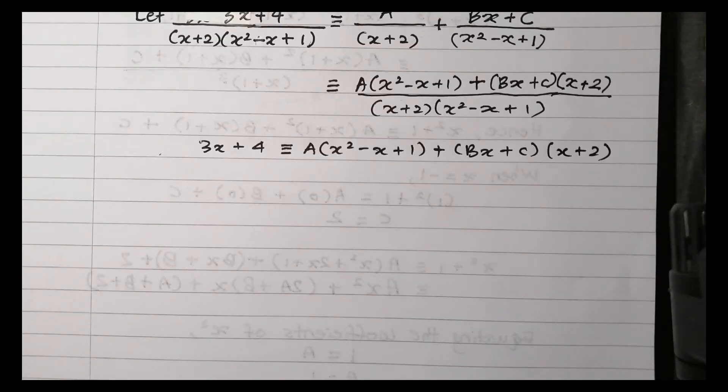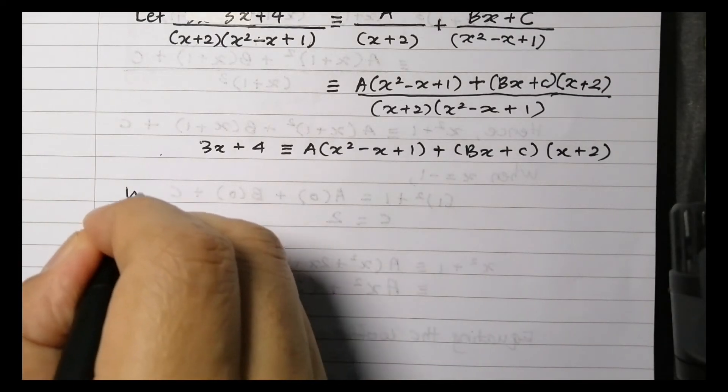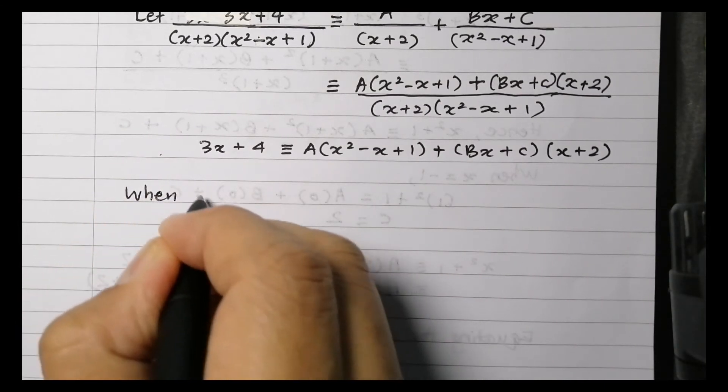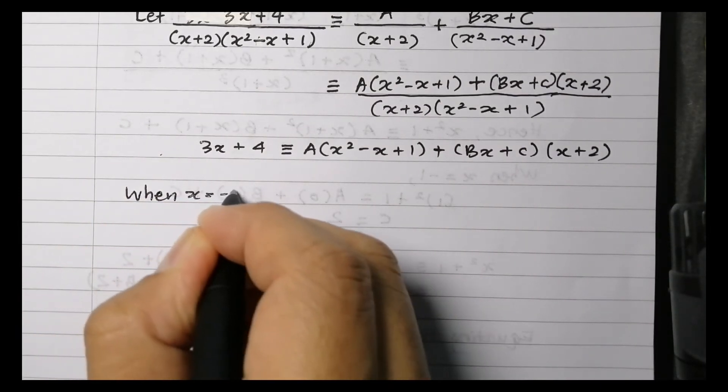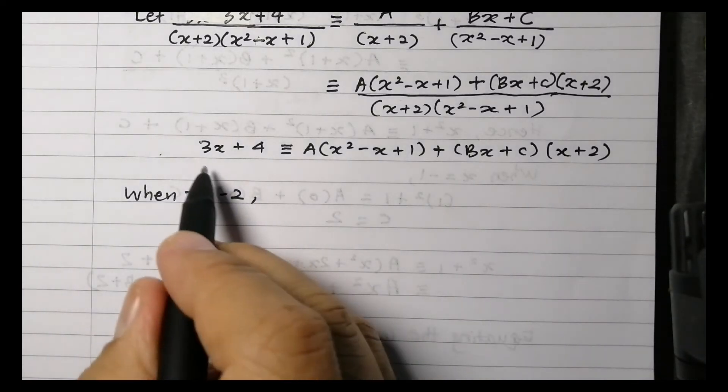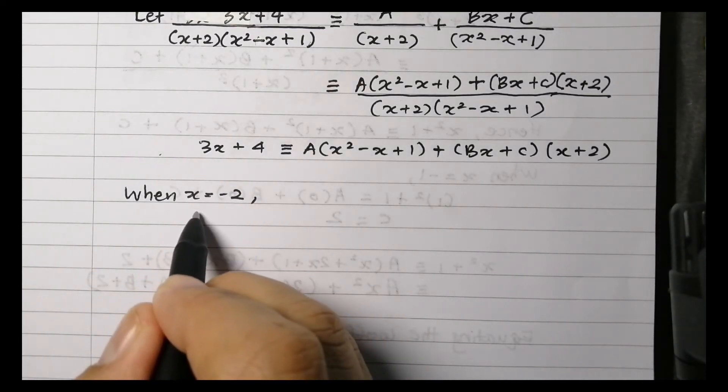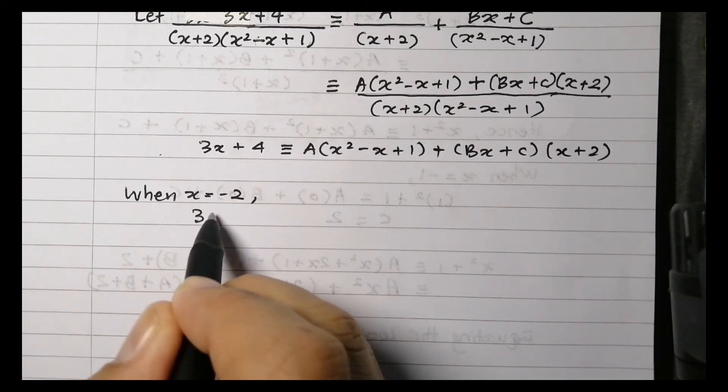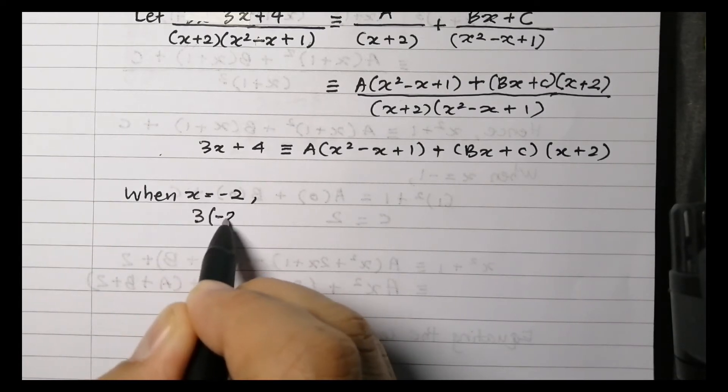From here we need to find the values of A, B, and C. So we start to find the values of A. We substitute X equals negative 2. When X equals negative 2, the B and C terms are eliminated. So we have the substitution here.